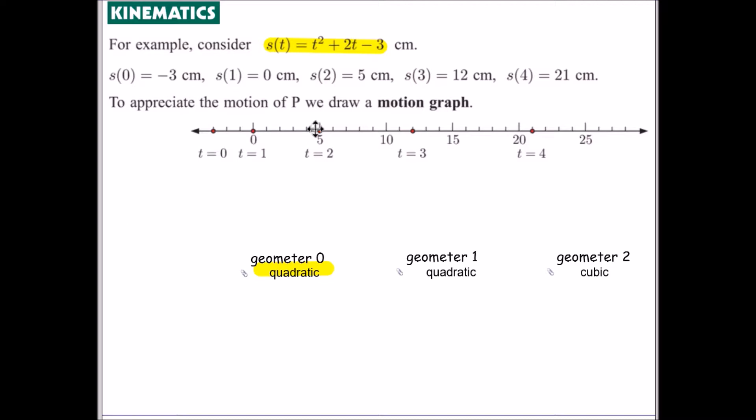And once again, here is our motion graph. So at t equals 0 we are at negative 3. t equals 1 we are at 0, and then at 5, 12, etc.